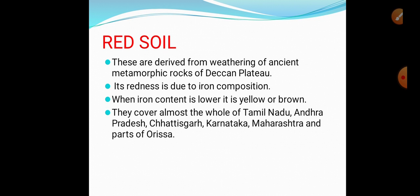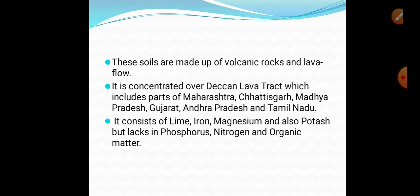The colour of the soil — whether yellow or red — depends on the consistency or content of iron. Red soils cover almost the whole of Tamil Nadu, Andhra Pradesh, Chhattisgarh, Karnataka, Maharashtra, and parts of Orissa. These soils are also made up of volcanic rocks and lava flows. When lava flows onto the surface of the earth, volcanic rocks form, and when they weather, red soil forms. It is concentrated over the Deccan lava tract, which includes parts of Maharashtra, Chhattisgarh, Madhya Pradesh, Gujarat, Andhra Pradesh, and Tamil Nadu.